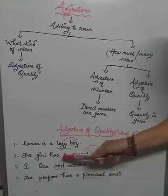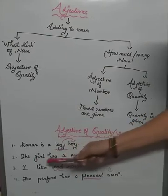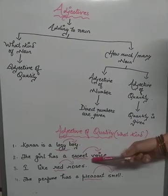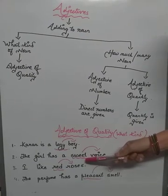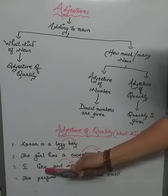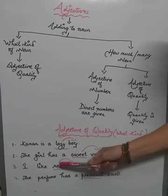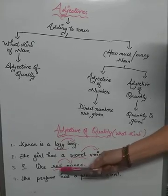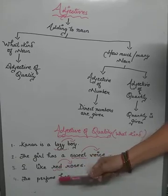The girl has a sweet voice. What type of voice does the girl have? It is describing the noun voice — sweet voice. So this is adjective of quality. I like red roses. Roses is a noun and red is describing roses, telling what type of roses: red. So red is the adjective.